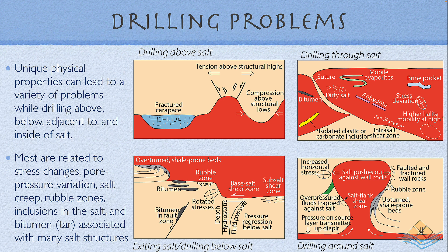Salt in the subsurface can create significant drilling problems. It can create zones of tension above structural highs, and when drilling through salt, a range of impurities can act as local pressure sources. Exiting the salt can move the drill into overpressured zones, and drilling around salt similarly risks intersecting zones of overpressuring. This range of physical properties and alterations — within the salt and in zones above and below — creates problems related to rapid stress changes, pore pressure variations as seen in the Albors 5 blowout, zones of salt creep, rubble zones, and zones of inclusion.